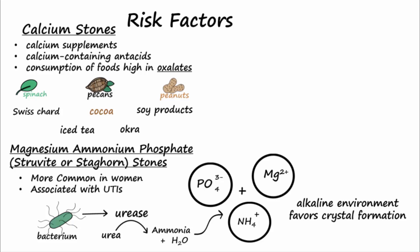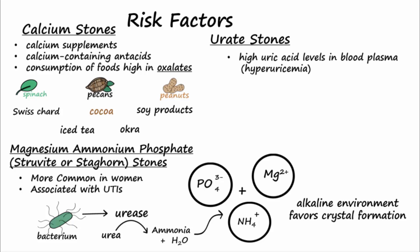Urate stones form more commonly in those that have high plasma levels of uric acid, or hyperuricemia. A drug used for gout called probenecid blocks urate reabsorption in the PCT and will decrease urate levels in the urine, which also increases the risk for urate stones. For this reason, it is especially important to drink lots of water while taking probenecid.